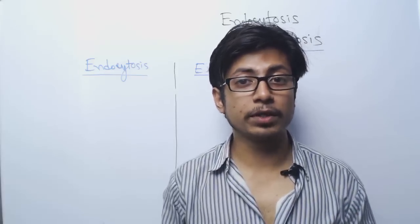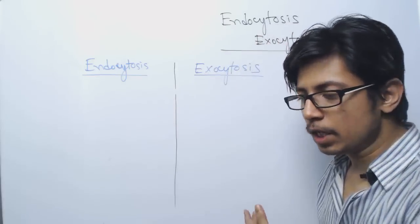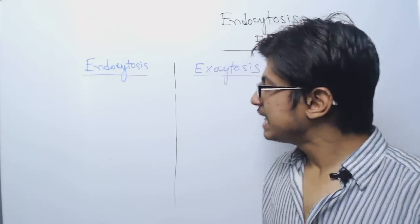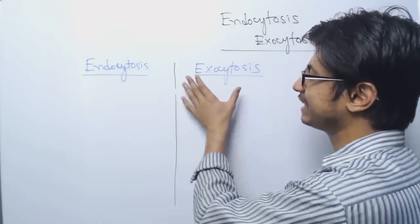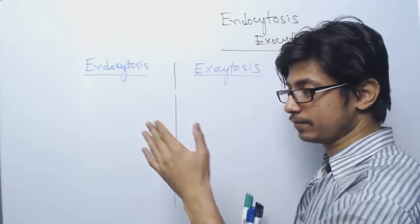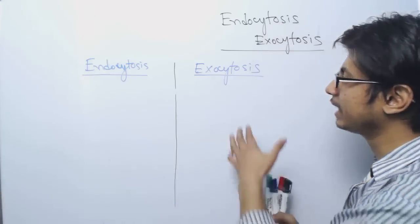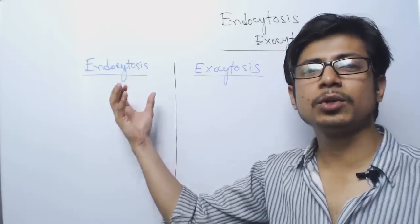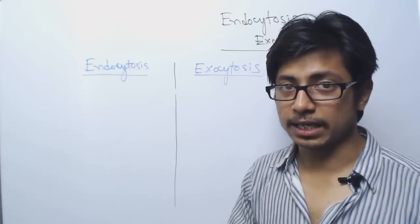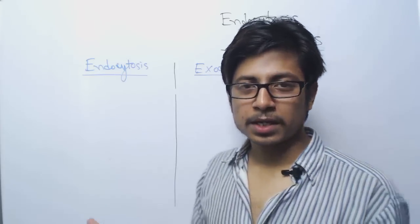Welcome to another video tutorial from Shomu's Biology. In this tutorial we'll be talking about endocytosis and exocytosis - what these processes are and the difference between them. The answers are present in their names: endo means inside, exo means going outside, and cytosis refers to what is happening for a cell. So endocytosis means going inside the cell, and exocytosis means going outside the cell.